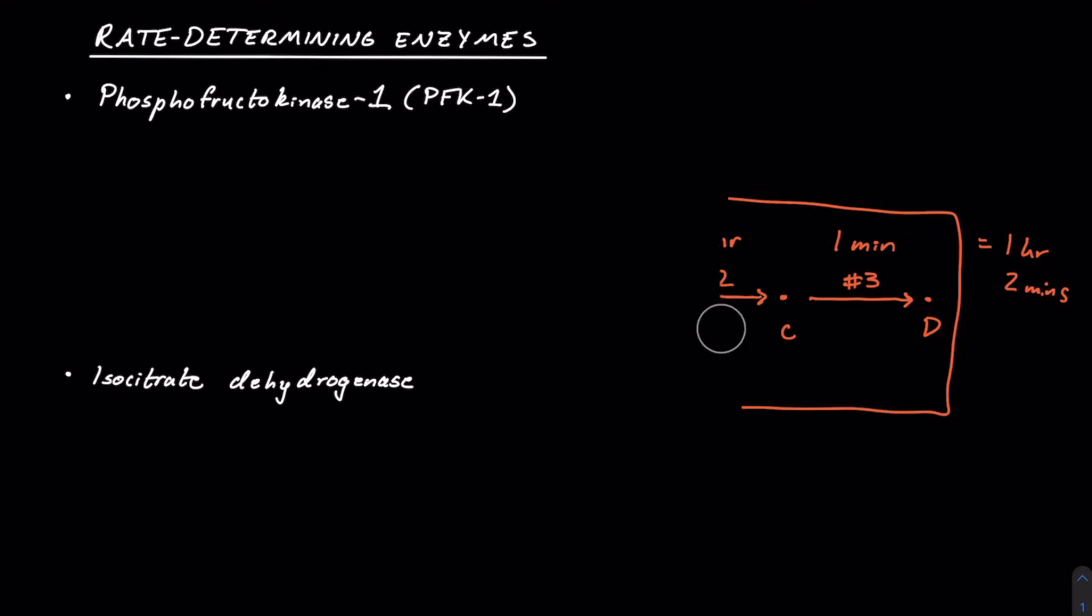Alright, that being said, let's jump into the different rate-determining enzymes of major metabolic processes. First things being first, let's take a look at phosphofructokinase-1. You should recognize this as the rate-limiting step of glycolysis, literally meaning breaking sugar, or specifically breaking down glucose here.